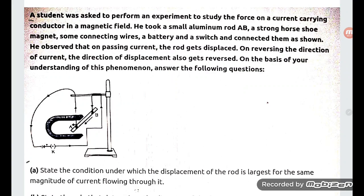See the problem. A student was asked to perform an experiment to study the force on a current carrying conductor in a magnetic field. He took a small aluminum rod. This is the aluminum rod that you can see - the small aluminum rod AB.